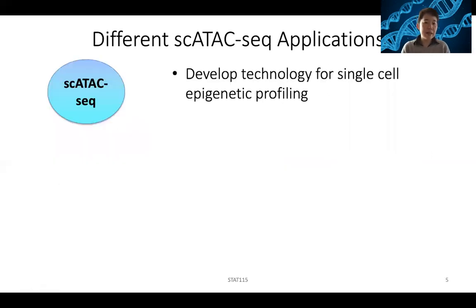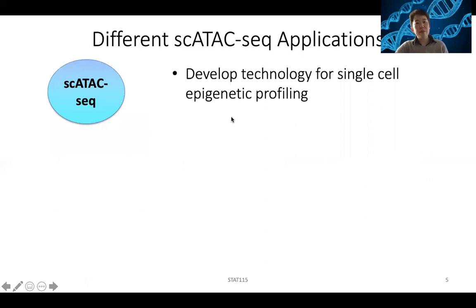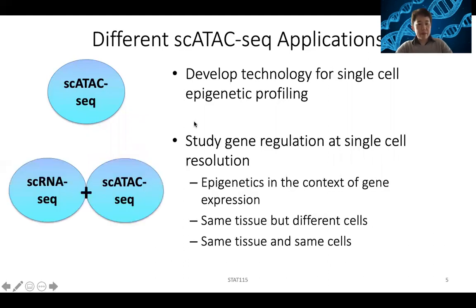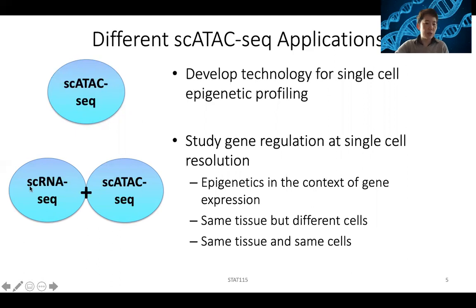In the very early days when people were just developing the technology, they only did single-cell ATAC-seq on some complex tissues such as brain, tumor, or PBMC — basically the white blood cells in the blood — mostly to develop the technology and make sure that you can do single-cell epigenetic profiling. But really, any study on gene regulation at the single-cell resolution — epigenetic profiling is only interesting in the context of understanding gene expression.